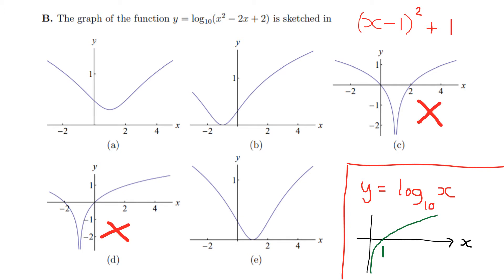Of the three remaining graphs, we ask: when does the expression in brackets equal 1? Only when (x−1)² = 0, i.e., x = 1. At x = 1, log₁₀(1) = 0, so the curve just touches 0 only when x = 1. There's exactly one graph that looks like that — it's the answer.